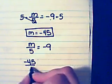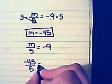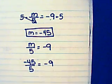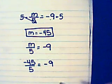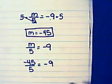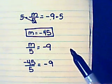Negative 45 divided by 5 equals negative 9. That works. If it didn't work, I would have to go back and check my work to see where I made my mistake.